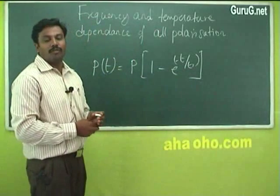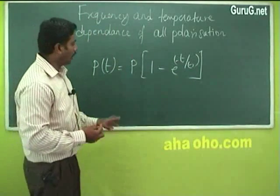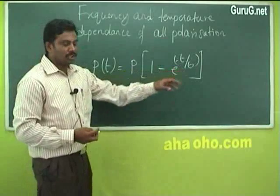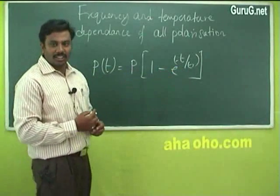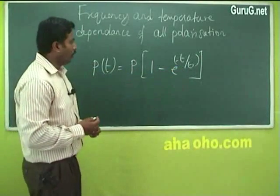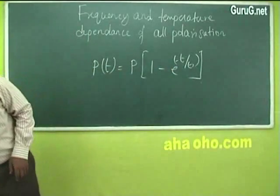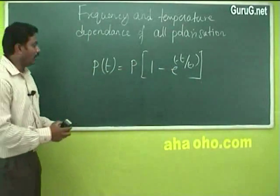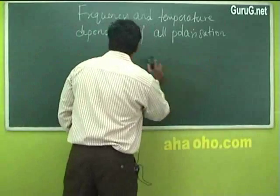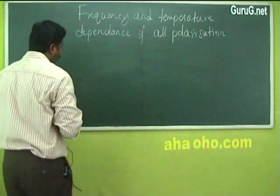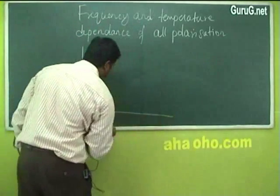The relaxation time tr is the time taken for the polarization to reach maximum polarization. Now when we plot a graph between polarization and frequency, we consider the different types of polarization.